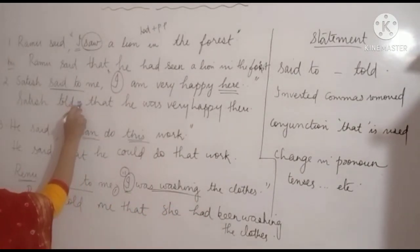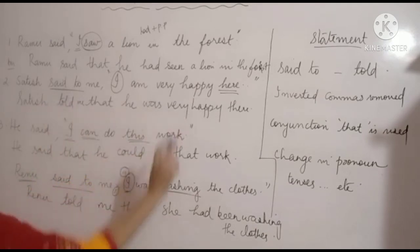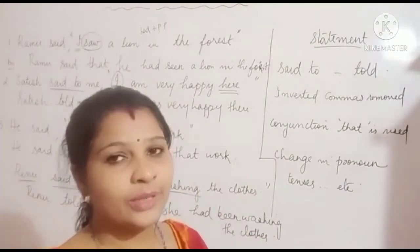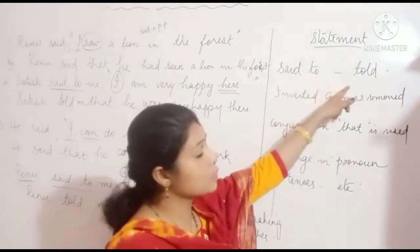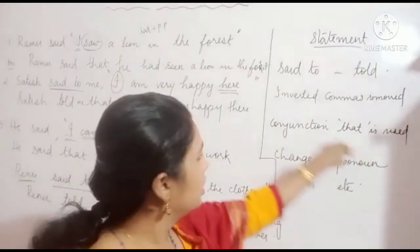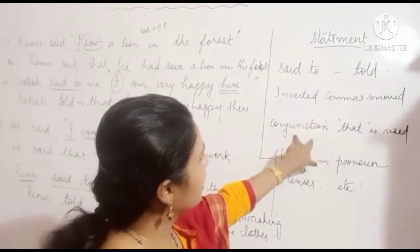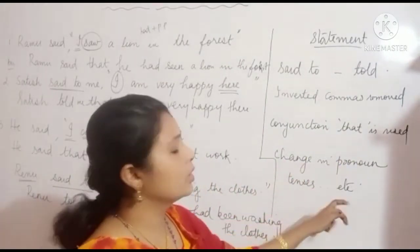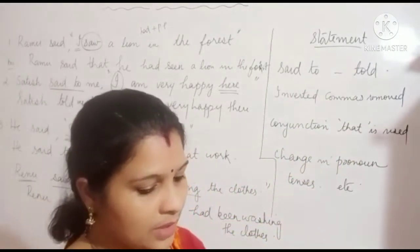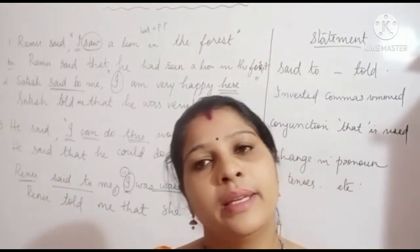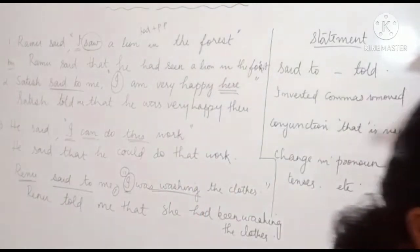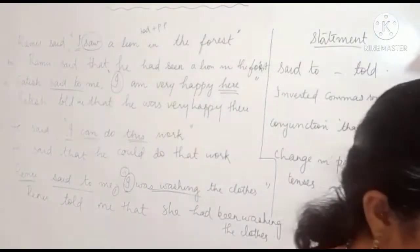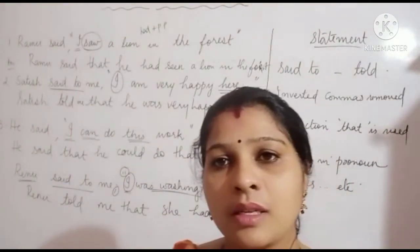So the things to remember while writing statements: 'said to' becomes 'told'; if only 'said' is given, write 'said' itself. Remove inverted commas and use conjunction 'that' to connect the parts. Change pronouns and tenses accordingly: simple present becomes simple past, present continuous becomes past continuous, simple past becomes past perfect, and past continuous becomes past perfect continuous.